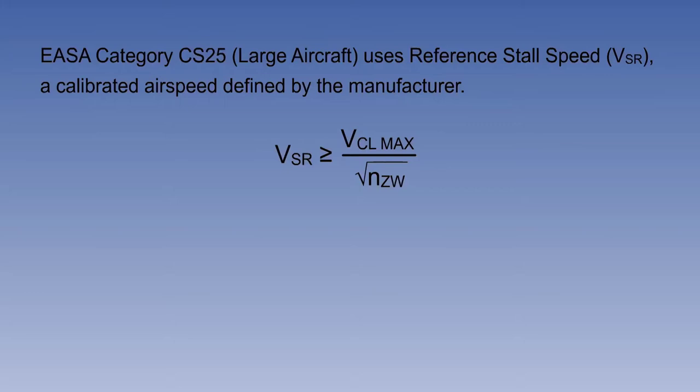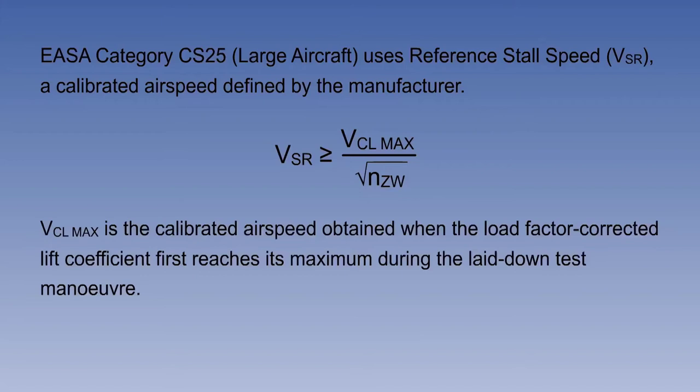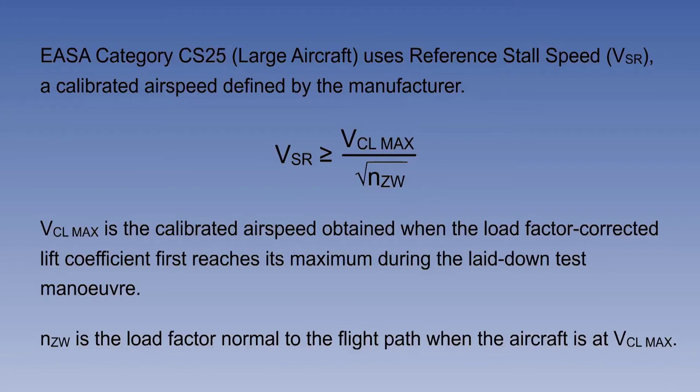VSR is expressed in formula form as being equal to or greater than VCL max over the square root of NZW, where VCL max is the calibrated airspeed obtained when the load factor corrected lift coefficient first reaches its maximum during the lay down test manoeuvre. If the aircraft is fitted with a stick pusher — a stall prevention device described in the next section — VCL max may not be less than the speed at which the device operates. NZW is the load factor normal to the flight path when the aircraft is at VCL max.